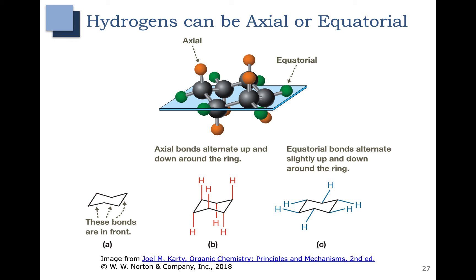Also note that every carbon has an axial hydrogen and an equatorial hydrogen, and they alternate up and down: up, down, up, down, up, down. The equatorial hydrogens do the same thing: down, up, down, up, down, up.